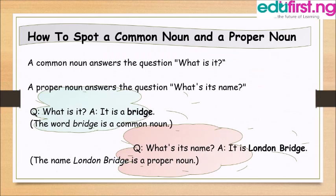There are ways to differentiate between a common noun and a proper noun. A common noun answers the question 'What is it?' — for example, 'What is it? It is a bridge.' While a proper noun answers the question 'What is its name?' — for example, 'What is its name? It is the London Bridge.'